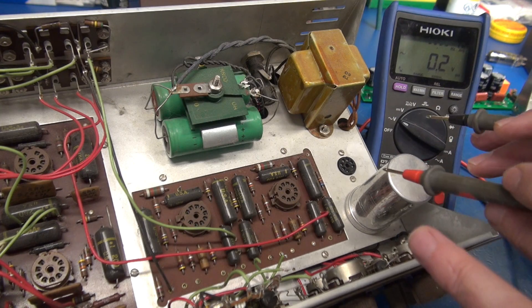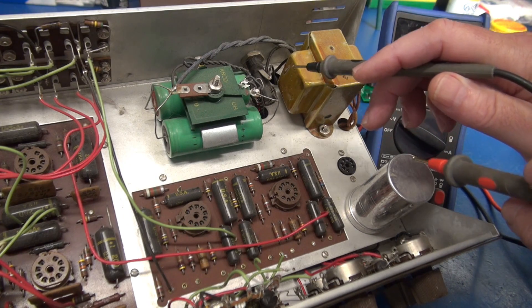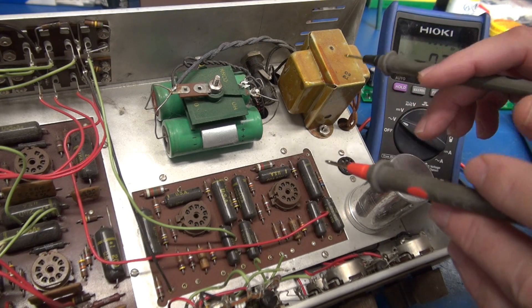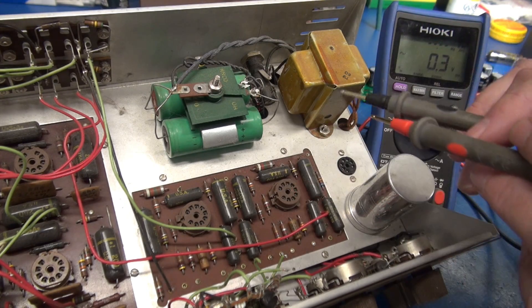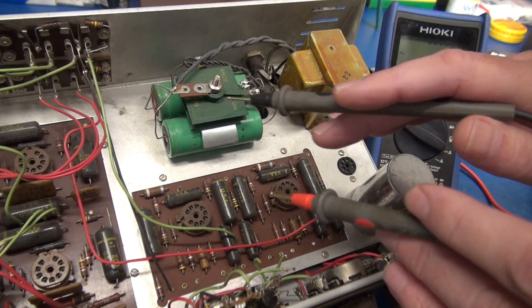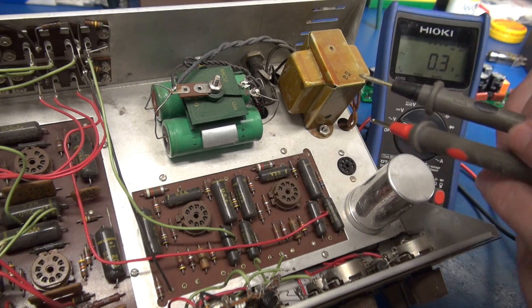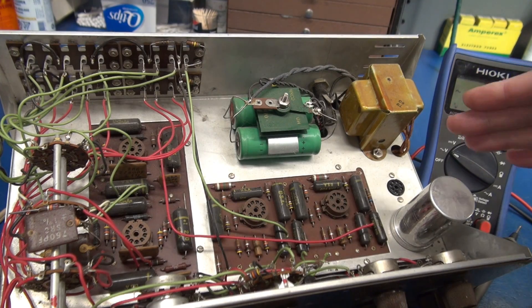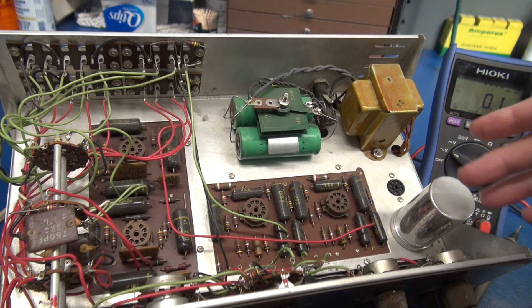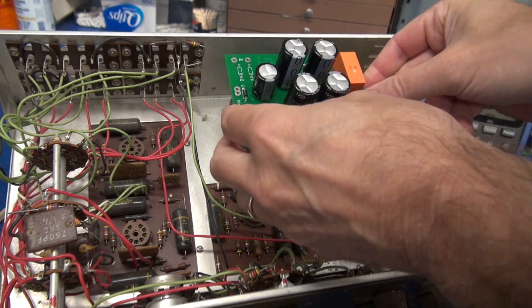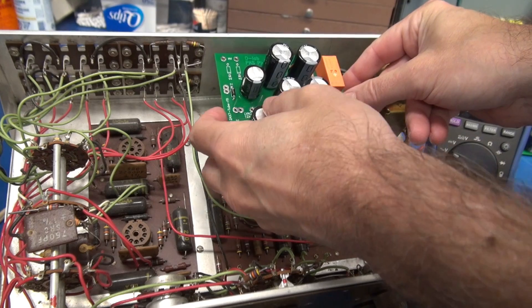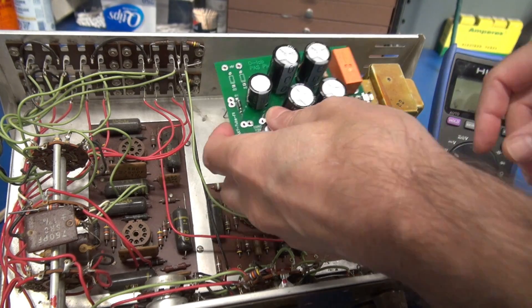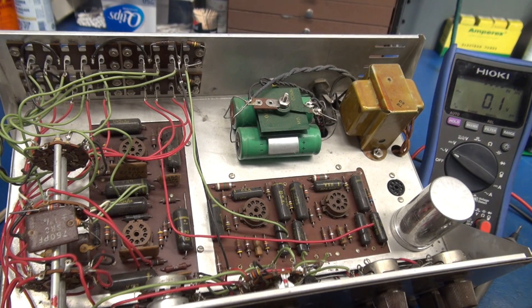The other thing that I'm going to have to deal with is somebody mounted a chassis mount fuse holder on the rear panel which is a great idea because these things didn't have fuse protection. But when I get ready to install my power supply board that fuse holder is going to interfere. Now that I've verified that the power transformer is good we'll be installing the D-Lab power supply board in this position and now you can see why the fuse holder is going to be in the way.